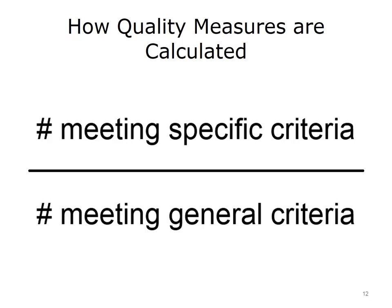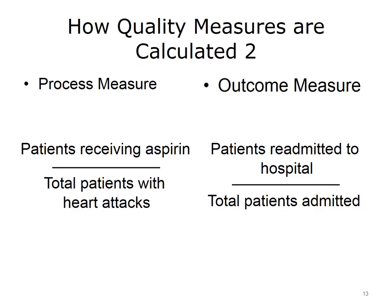A measure is an actual measurement of the number of cases meeting a specific criteria, out of a total number of cases meeting a general criteria. It can be represented by a ratio or a percentage. The denominator is calculated first — this is the description of the overall population that would be eligible for the service, process, outcome, or experience measure being calculated. The numerator is the number of specific cases that meet the condition of the measure. With the earlier example of the process measure — heart attack patients given aspirin — the denominator would be the total number of patients admitted to the hospital for a heart attack in a given time period. The numerator would be the number of those patients who received aspirin therapy. The goal is to have the numerator as close to or equal to the denominator — that is, we would like all patients who are eligible for aspirin therapy to receive it.